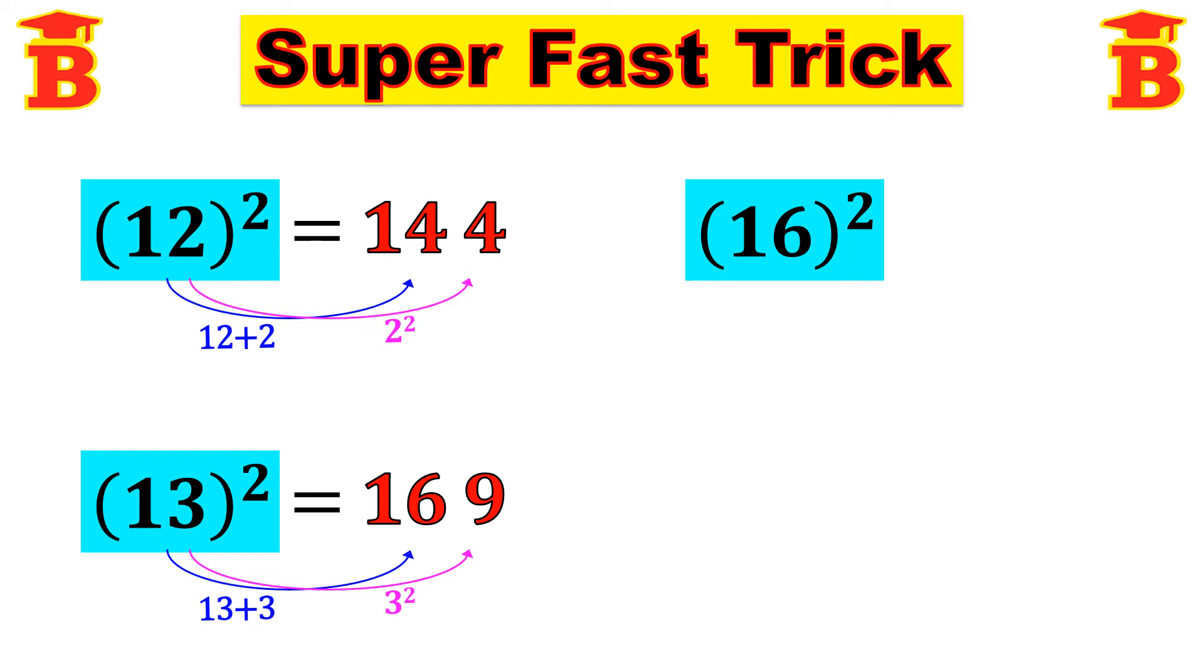Next let us square the number 16. 16 square equal to, first step square the last digit i.e. 6 square. 6 squared is 36. So we have to write 6 and take carry 3.